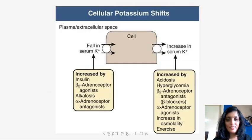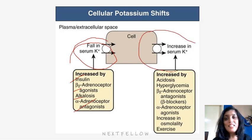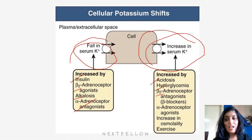Potassium fall in serum potassium is increased by insulin, beta adrenoreceptor agonists, alkalosis, and alpha adrenoreceptor antagonists. Whereas increase in serum potassium is caused by acidosis, hyperglycemia, beta blockers, alpha agonists, increase in osmolality, and exercise.